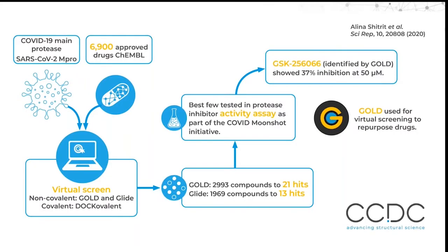To provide an example of how GOLD works, here is a recent publication from Tel Aviv University where the virtual screen identified potential drugs to repurpose against COVID-19. The Campbell database of drugs at various stages of clinical trials was filtered, and the resulting library screened in silico using non-covalent and covalent methods. GOLD was used in non-covalent virtual screening and identified 21 hits. The lead compounds went on to be tested by a protease inhibitor activity assay as part of the COVID Moonshot Initiative, finding one compound — a molecule in phase 2 for treatment of COPD — that showed 37% inhibition at 50 micromolar concentration.